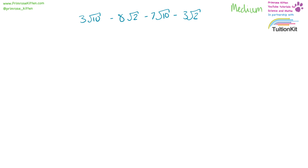3 square root 10 minus 7 square root 10 is minus 4 square root 10. Minus 8 square root 2 minus 3 square root 2 is minus 11 square root 2. So the answers are minus 4 square root 10 and minus 11 square root 2.